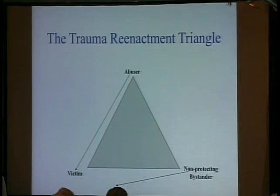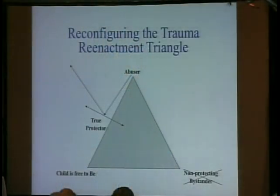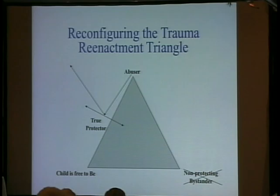When you work with clients to reconfigure the trauma reenactment triangle, you help them develop a true protector in persons, places, and things in their lives, and replace the non-protecting bystander with that true protector. The true protector goes in between not only the physical abuser but any internalized abuser that keeps the trauma going, and the victim becomes the child, free to become who that child was never free to be, and gets reintegrated with the self.